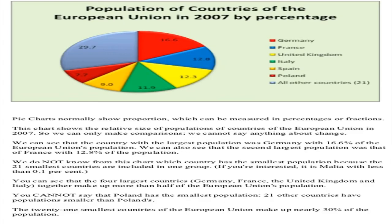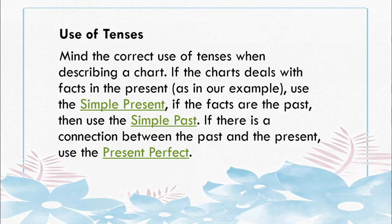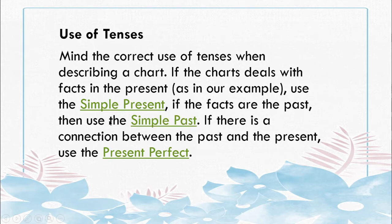So what have we understood by reading this analysis? We can see the introduction — this is the introductory paragraph — and the message of the diagram, and finally the conclusion. From this analysis we can find some important points. One important point is the use of tenses: mind the correct use of tenses when describing a chart. If the chart deals with facts in the present, use the simple present. If the facts are in the past, use simple past. If there is a connection between the past and present, use the present perfect.